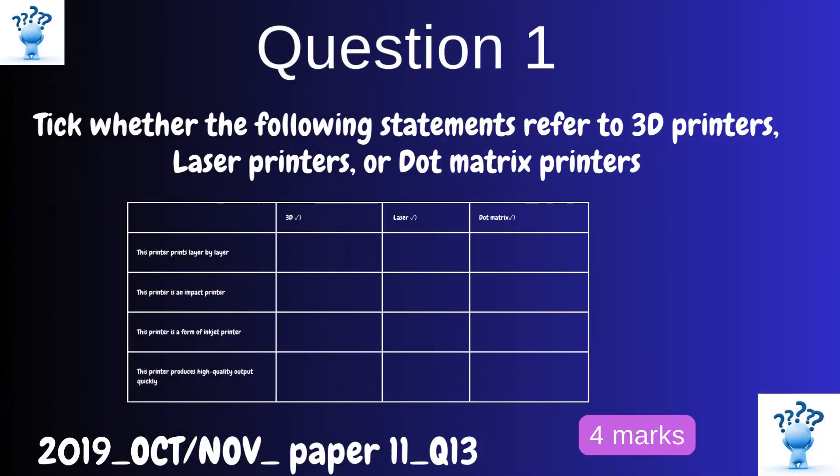Question 1. Tick whether the following statements refer to 3D printers, laser printers, or dot matrix printers. A. This printer prints layer by layer. B. This printer is an impact printer. C. This printer is a form of inkjet printer. D. This printer produces high quality output quickly.